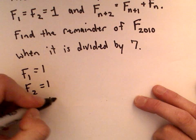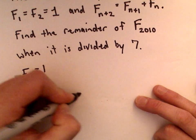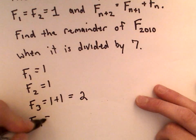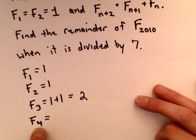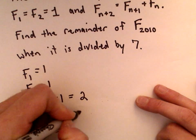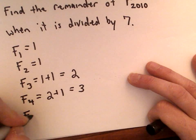So we would get 1 plus 1, which would be 2. And then to get our fourth term, we would add the two previous terms. So for the fourth term, we would add the third and the second term, so we would have 2 plus 1, which equals 3, and so on and so forth.